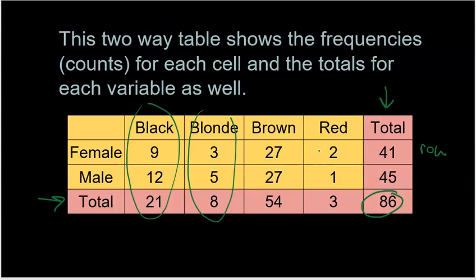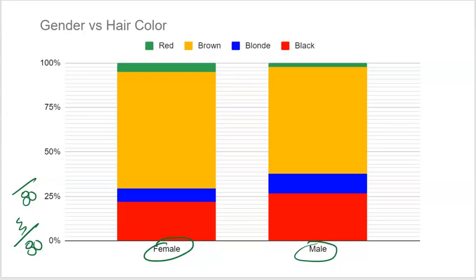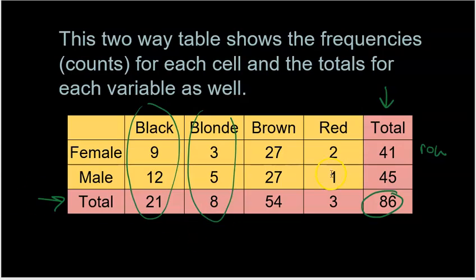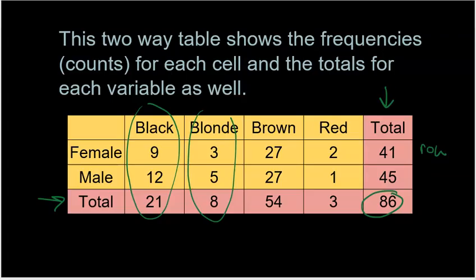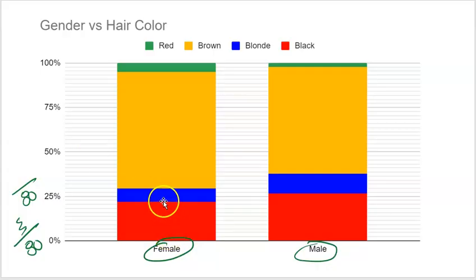Going back to how the segmented bar chart broken down by gender was made: for the female bar, 9 out of 41 females have black hair, which is about 22% or 0.22. So the first red section representing black hair goes up to 22%. Then for blonde hair, 3 out of 41 females is about 7%, and that 7% is stacked right on top of the 22% already representing black hair. Pretty easy to make those charts.